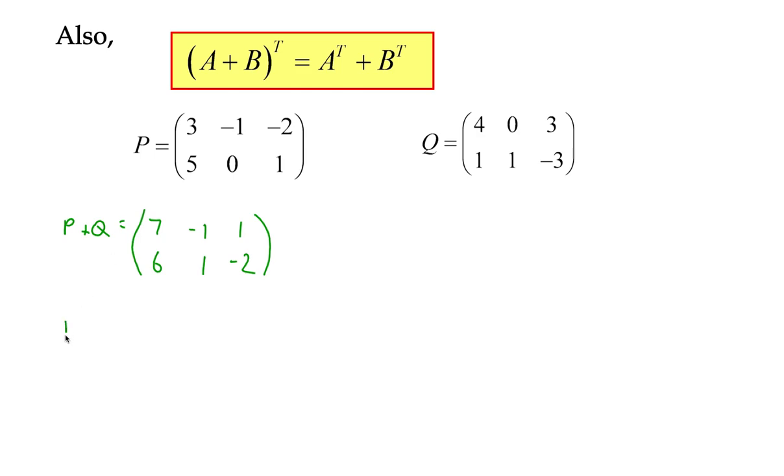Now if I were to transpose that matrix, so P plus Q brackets transpose, then we end up 7, negative 1, 1 becomes our first row, that's our column, and 6, 1, negative 2 becomes our second column.